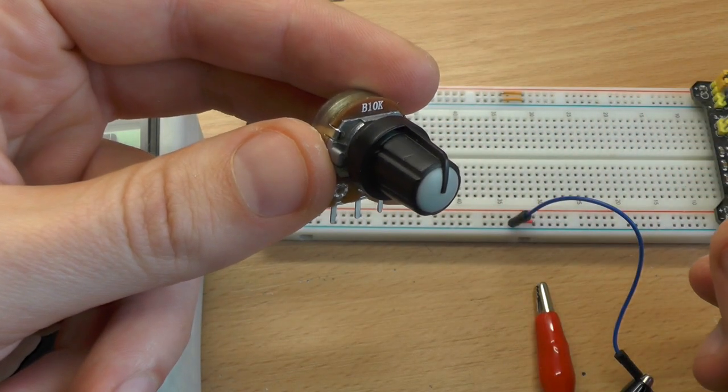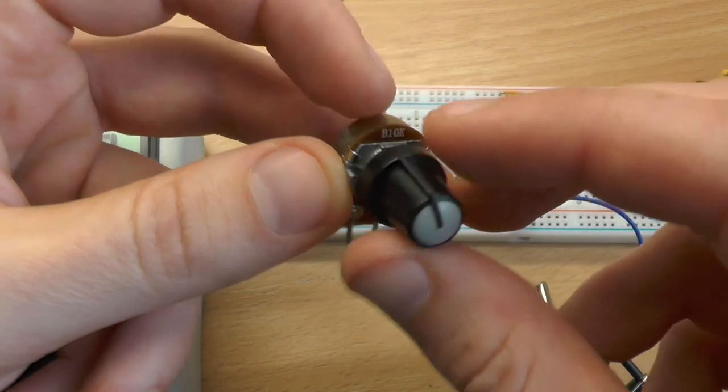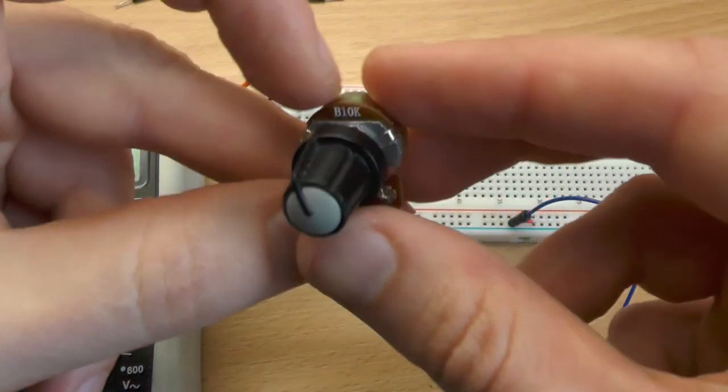The easiest way to generate a reference voltage is using a potentiometer. You have to use higher values there like my 10k here.